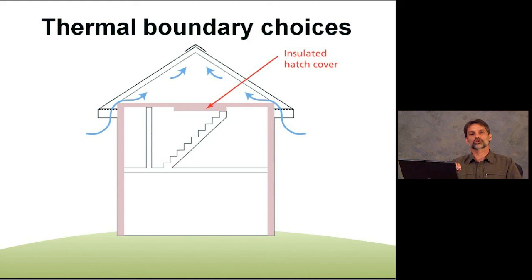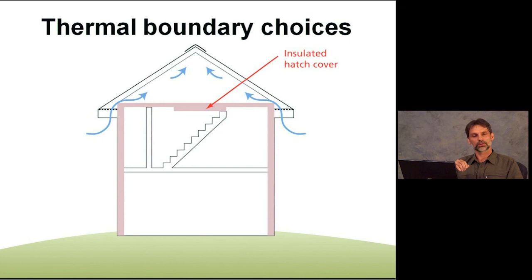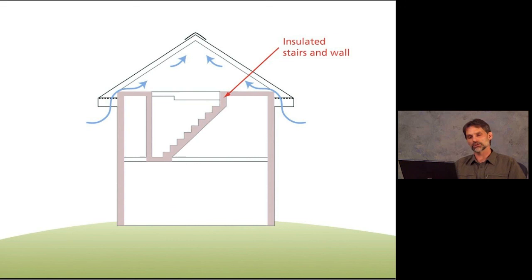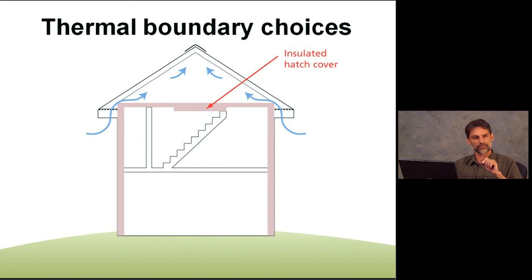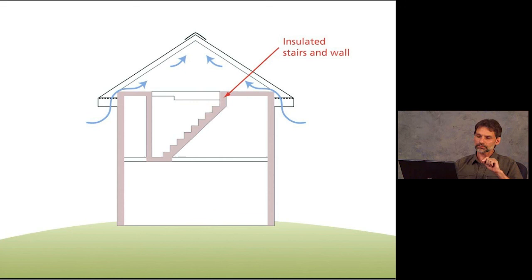We always have choices: in this slide we have an insulated hatch with the thermal boundary shown in pink, but we can do it either way — insulating at the attic hatch or down the stairway along the interior wall — and have an effective high-performance structure. What matters is getting a good job done regardless of the strategy, and that house is going to work just fine.